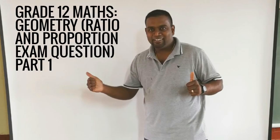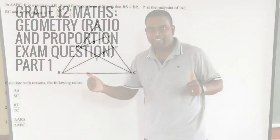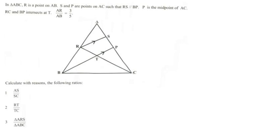Hi guys, in this video we're going to be looking at Euclidean geometry, ratio and proportion. The example we have in front of us is from a 2018 examination paper. It says in triangle ABC, R is a point on AB, S and P are points on AC such that RS is parallel to BP. P is the midpoint of AC, RC and BP intersects at T, and AR over AB is equal to 3 over 5.